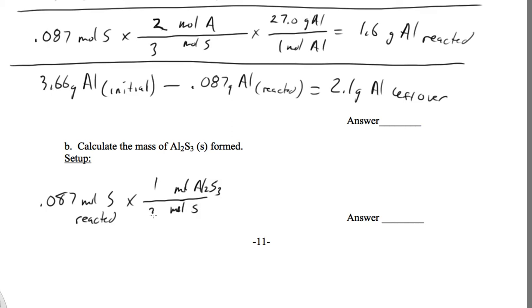So moles sulfur on the bottom and moles aluminum sulfide on top. That's 1 to 3 from the balanced equation. And then I need to multiply by the grams aluminum sulfide per 1 mole aluminum sulfide, which is 150 grams to 1 mole. And we get 4.4 grams aluminum sulfide formed.